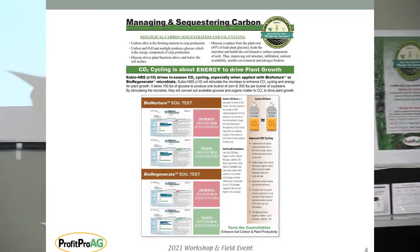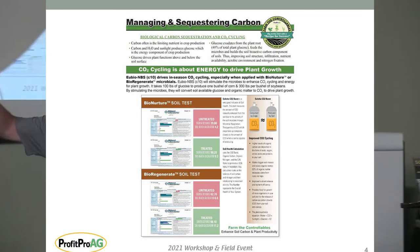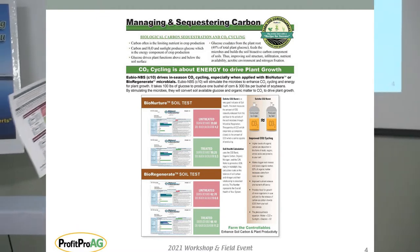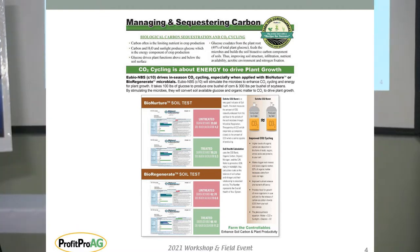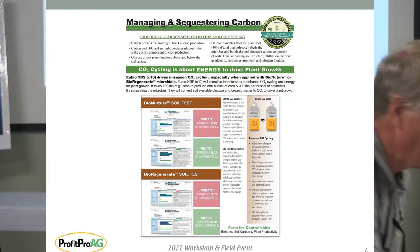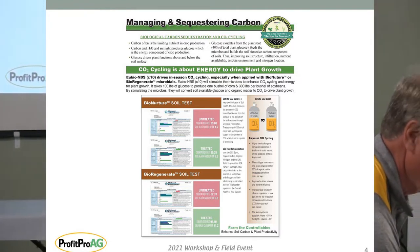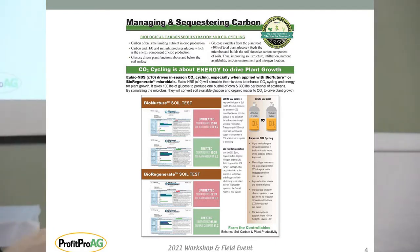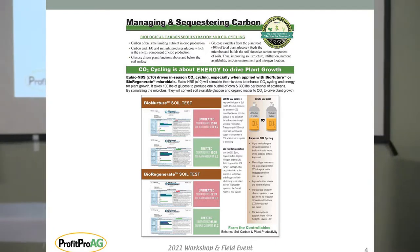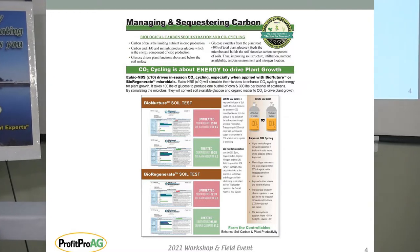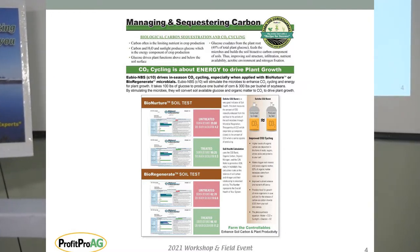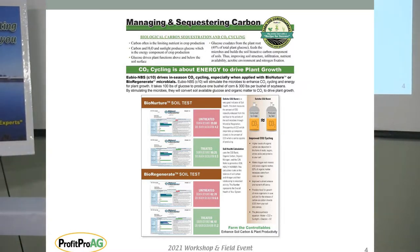There's really a lot of information on this sheet, and you should have that handout. The reason we're talking about managing and sequestering carbon: biological carbon sequestration and CO2 cycling — carbon is often the limiting nutrient in crop production. Carbon, H2O, and sunlight produce glucose, which is the energy component of crop production.